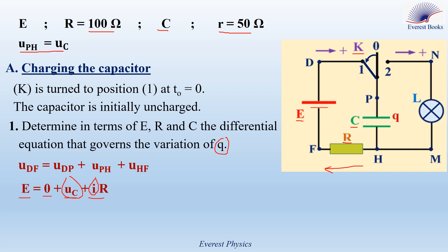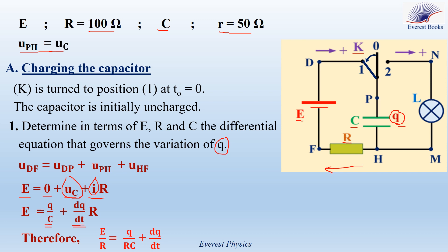Let's start with Uc. Look at the circuit. Q is equal to C times UPH, which is equal to C times Uc. This means that Uc is equal to Q over C. Now, the current — look at the positive sense — the positive sense enters the capacitor through the plate of charge Q. Then I is equal to plus dQ by dt. Dividing the equation by capital R, we get: E over R equals Q over RC plus dQ by dt. This is the differential equation that governs the variation of the charge Q.